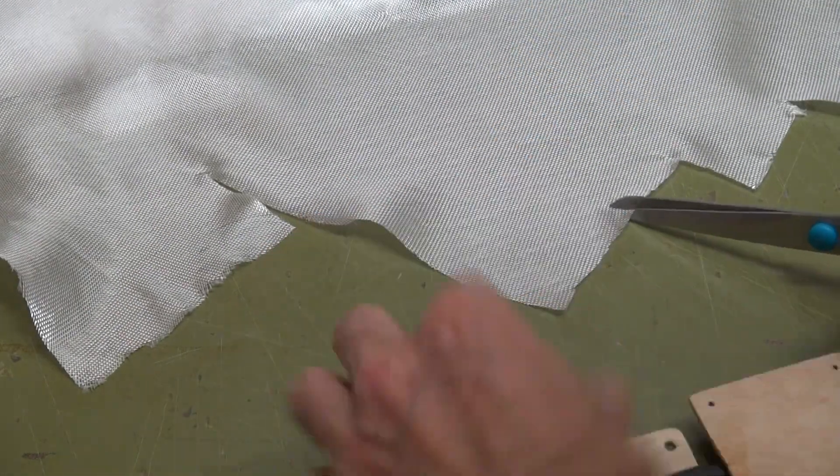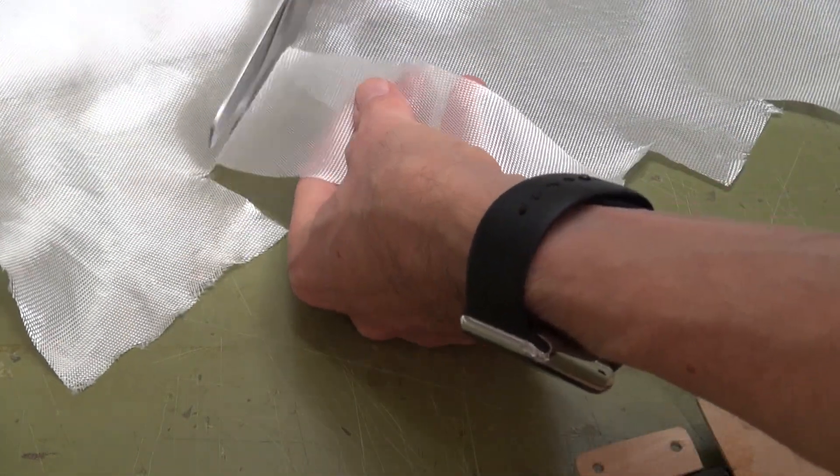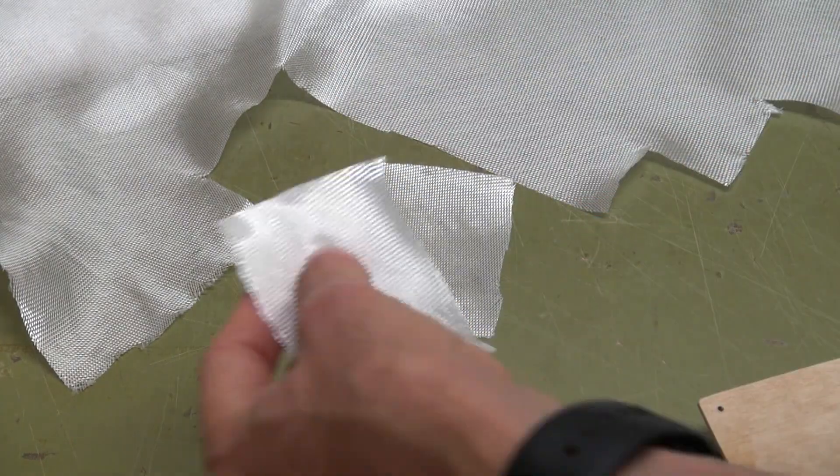For the wings you need one piece for the upper side and one for the underside. The orientation of the filaments should be again 45 degrees.